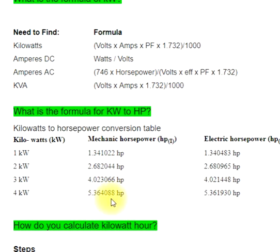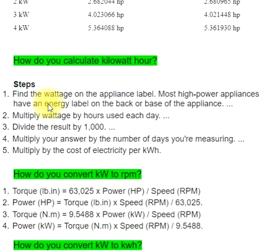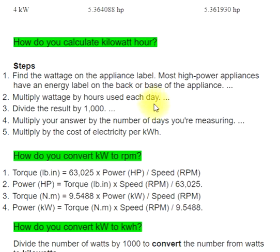4 kW = 5.364088 HP = 5.361930 HP. How do you calculate kilowatt hour? Step 1: Find the wattage on the appliance label. Most high-power appliances have an energy label on the back or base. Step 2: Multiply wattage by hours used each day. Step 3: Divide the result by 1000. Step 4: Multiply by the number of days you're measuring. Step 5: Multiply by the cost of electricity per kilowatt hour.